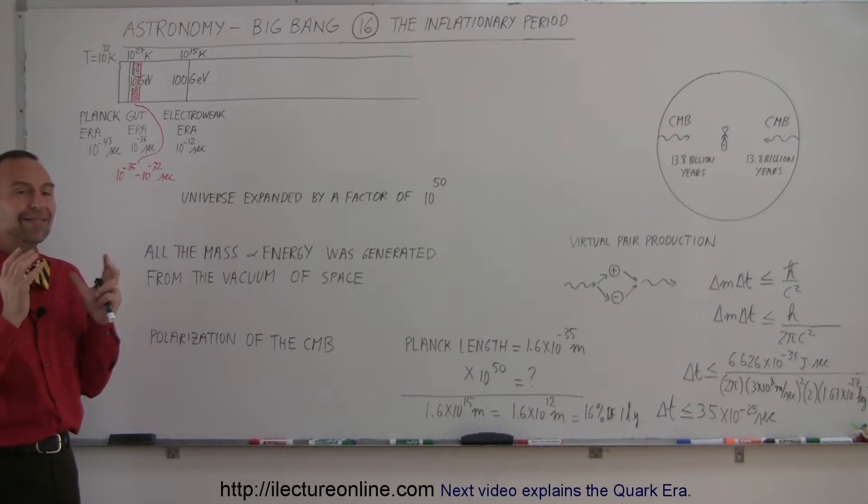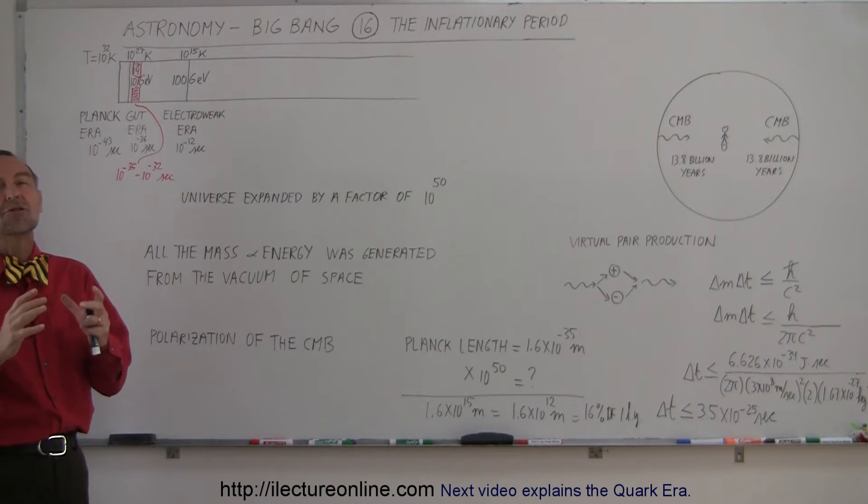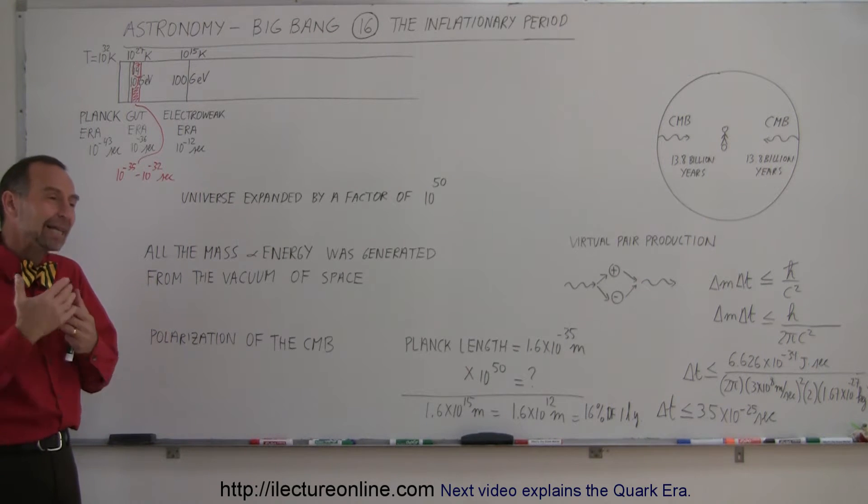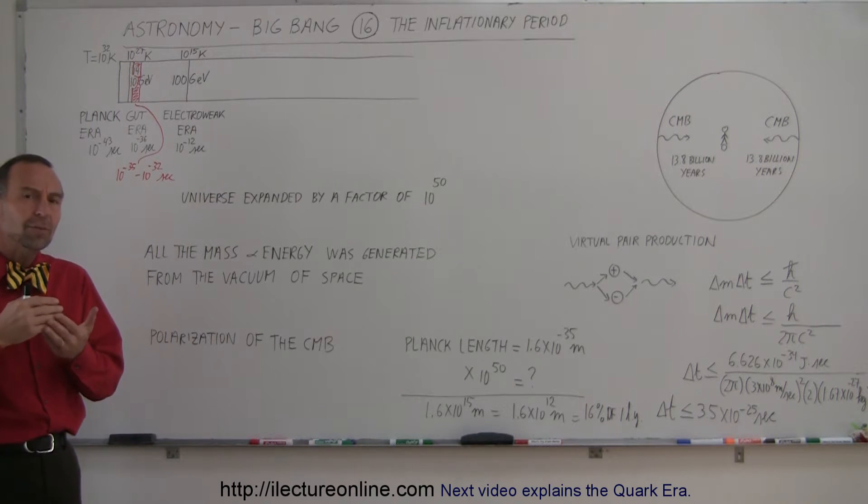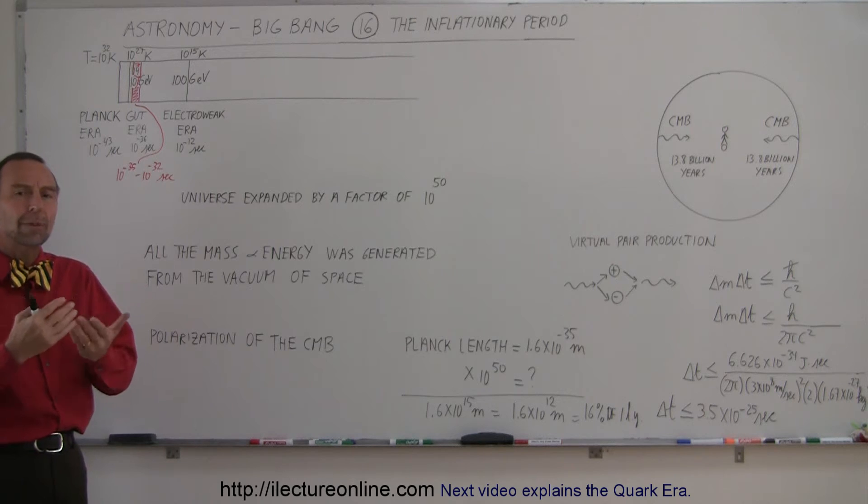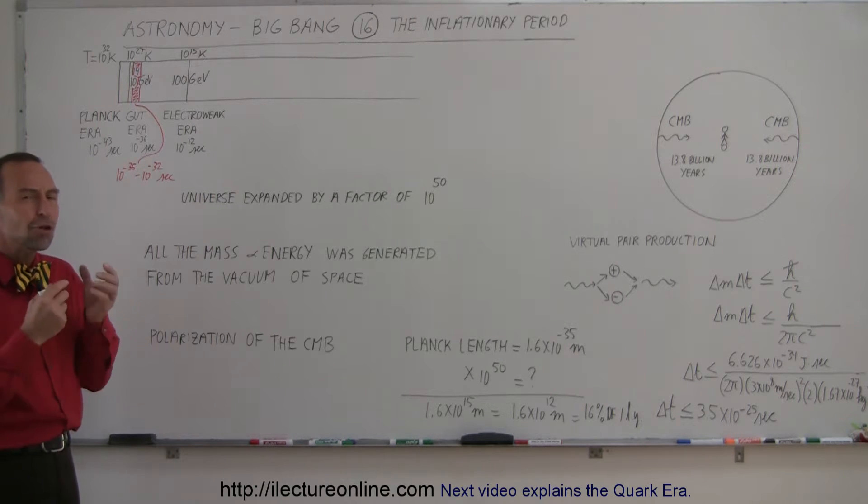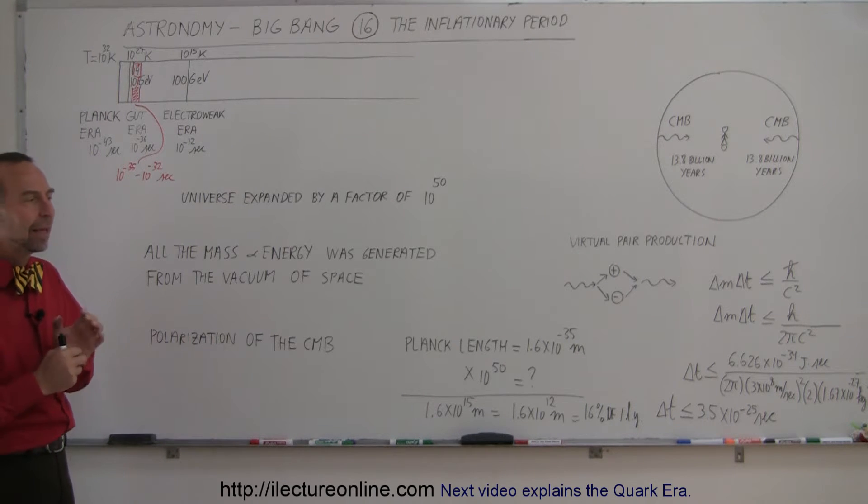The universe grew in size by a factor of about 10 to the 50th. Now again, where did that number come from? That was an estimation, an assumption based on a lot of calculations, a lot of things that they looked at. It used to be a smaller number, but now they upped it to about 10 to the 50th. That's an enormous increase in size. I'll give you a feel of what that really is like in just a moment.